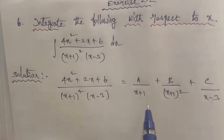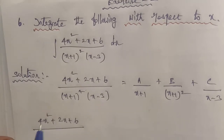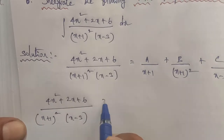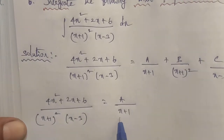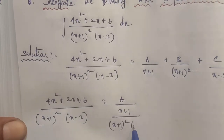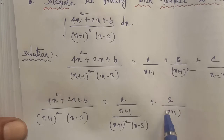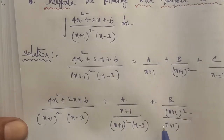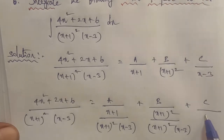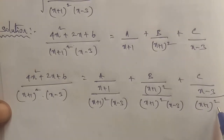So again, the given question is 4x squared plus 2x plus 3 divided by (x plus 1) whole power squared into (x minus 3), divided and equated. Each term: A divided by (x plus 1) has denominator (x plus 1)² (x minus 3), plus B by (x plus 1)² has denominator (x plus 1)² (x minus 3), plus C by (x minus 3) has denominator (x plus 1)² (x minus 3).